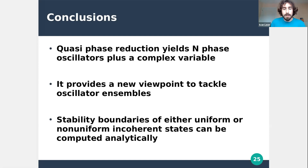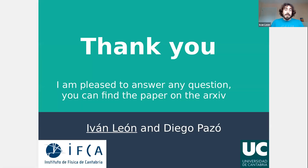The key conclusion is that quasi-phase reduction yields a system of n phases plus a complex variable — an enormous dynamical reduction. It provides a new viewpoint and tool for understanding oscillatory ensembles, computing stability boundaries for uniform and non-uniform incoherent states much more easily than other methods. You can find the paper on the arXiv.